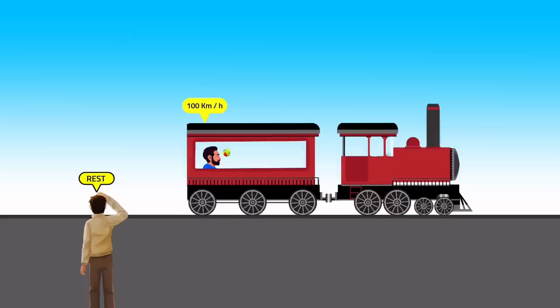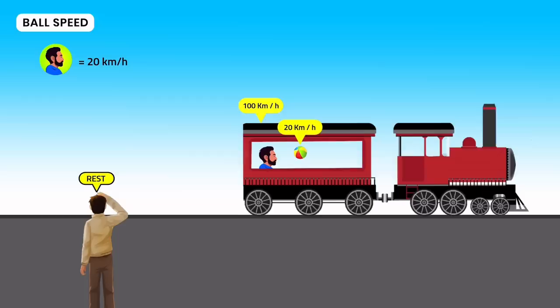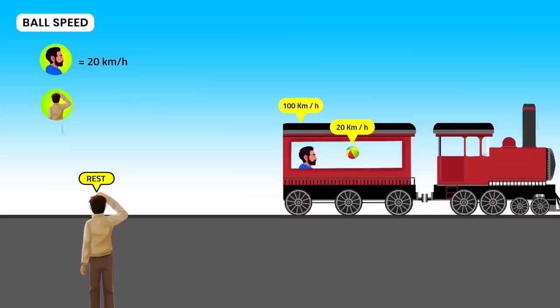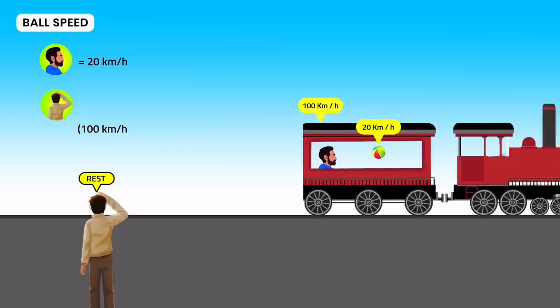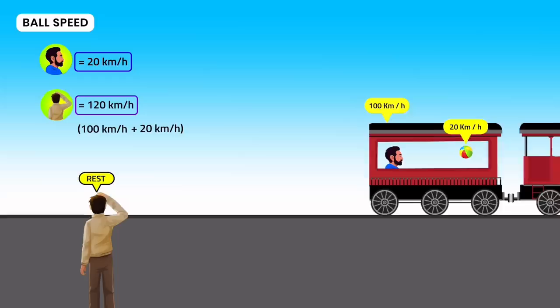In the train scenario — you are at rest, your friend travels in the train — what happens if he throws a ball at 20 kilometers per hour? From your friend's perspective, he is at rest and the ball travels 20 kilometers per hour. But from your perspective, your friend is already traveling at 100 kilometers per hour and the ball moves away from him at 20 kilometers per hour — so you calculate the ball's speed as 120 kilometers per hour. Both answers are right because speed is relative.